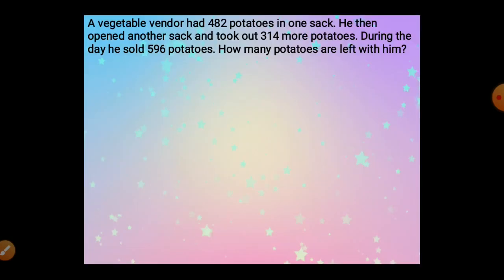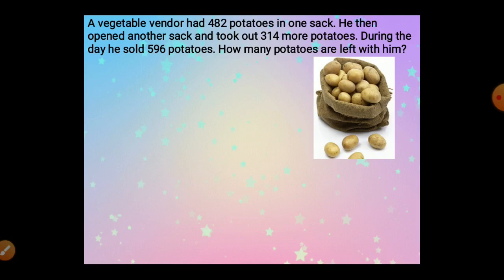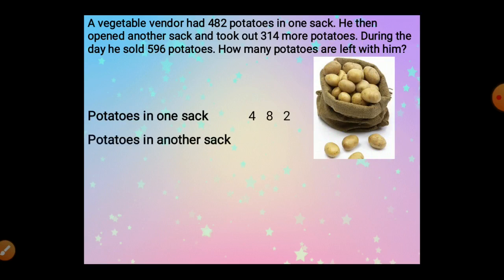A vegetable vendor had 482 potatoes in one sack. He then opened another sack and took out 314 more potatoes — more potatoes means addition. During the day he sold 596 potatoes. How many potatoes are left — left means subtraction. Potatoes in one sack: 482, in another sack: 314. Total potatoes — doing addition: 4 plus 2 is 6, 8 plus 1 is 9, 4 plus 3 is 7. Total: 796.